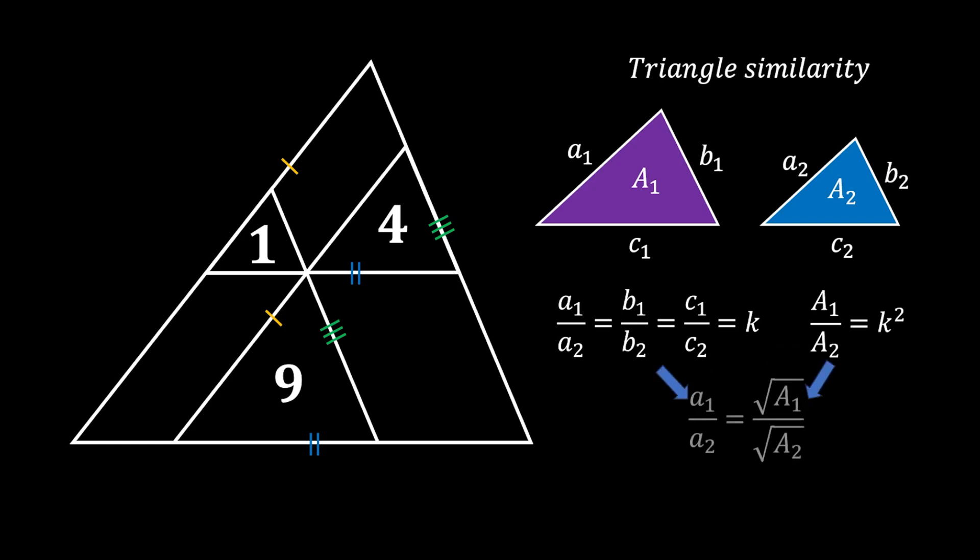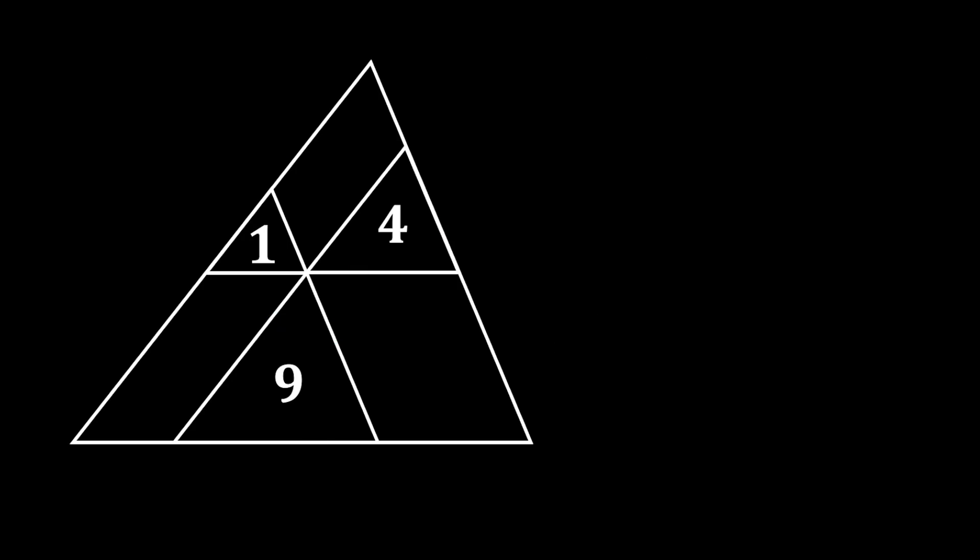From these two facts we can conclude that the relation between the sides of those two triangles is actually equal to the relation between the square roots of their areas. We will use this fact in our favor to solve our problem.